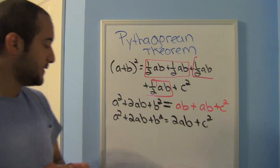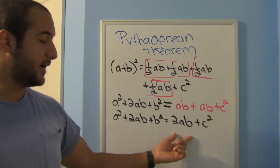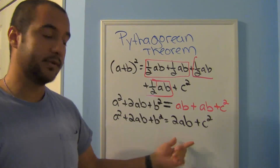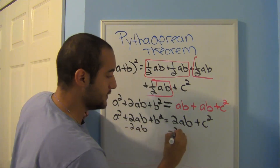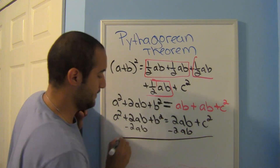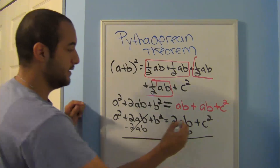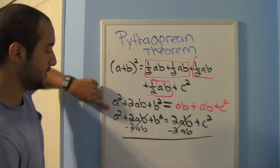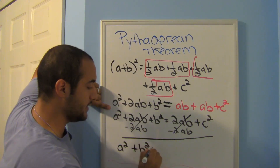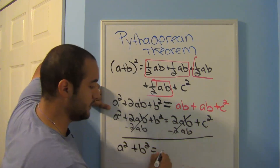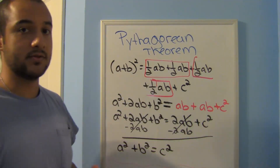Notice I have 2aB on both sides. I can cancel them using subtraction rules: subtract 2aB from both sides — it's gone from the left and gone from the right. All I have left is a squared plus B squared equals C squared. And there we have a proof of the Pythagorean theorem.